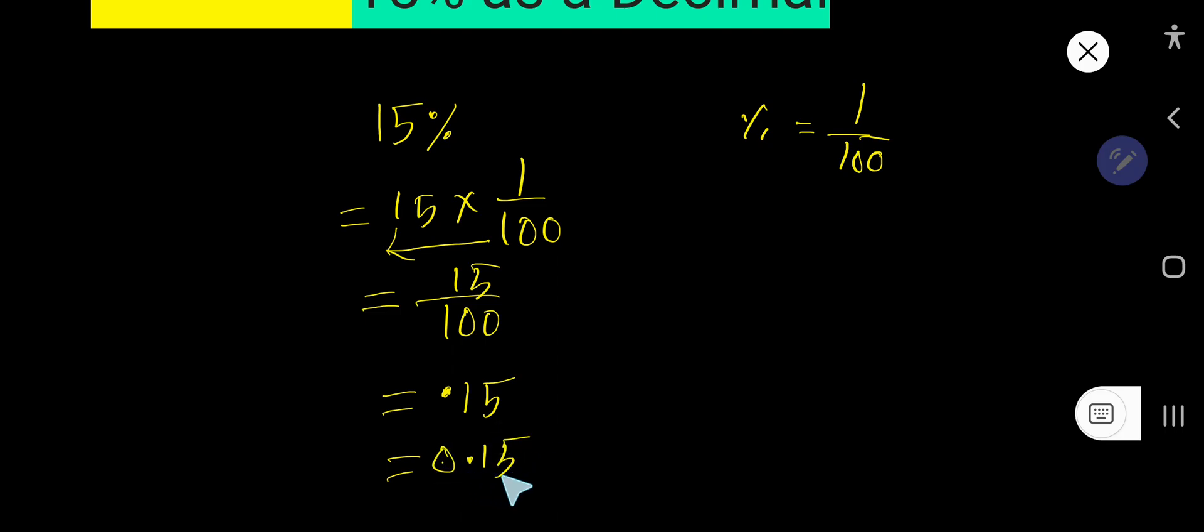We can also rewrite this as 0.15. So this is the decimal form. The zero is used because this number is less than one.